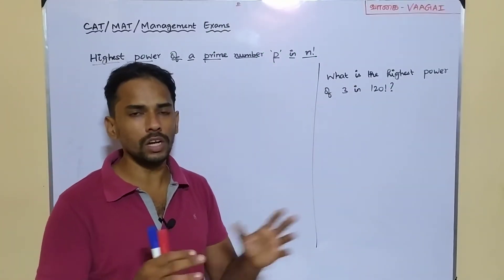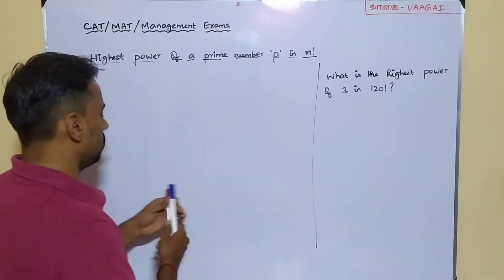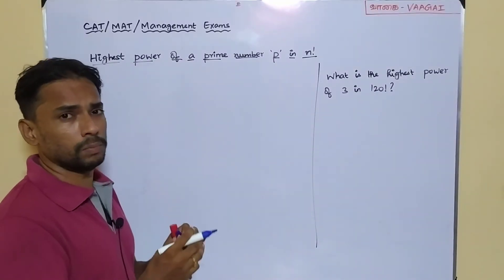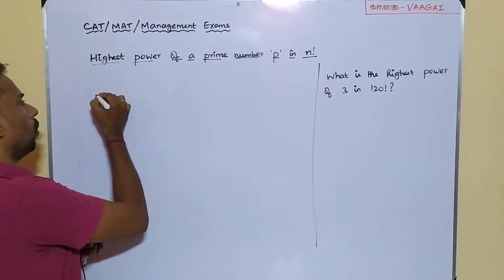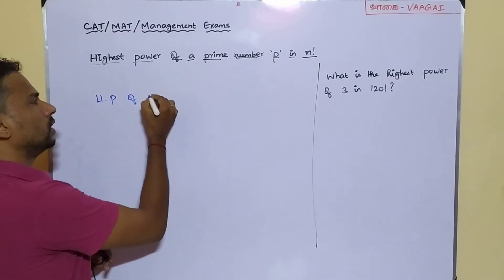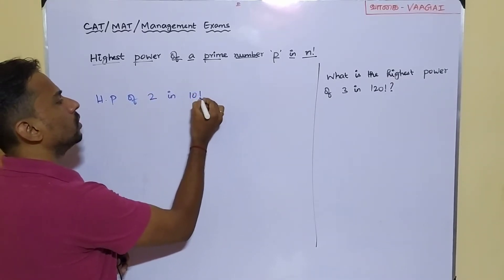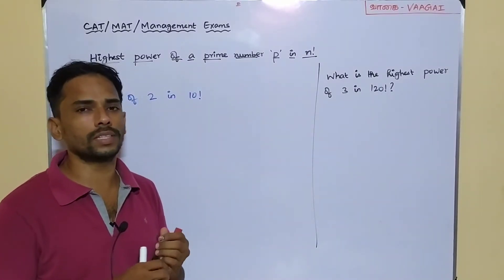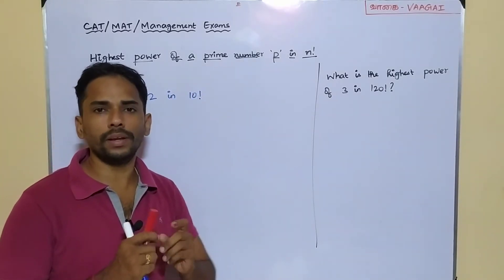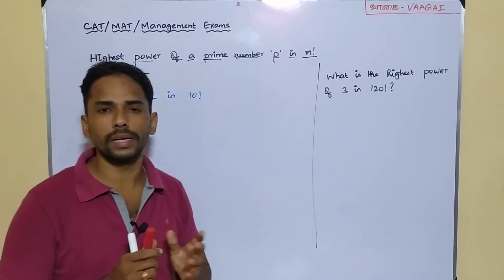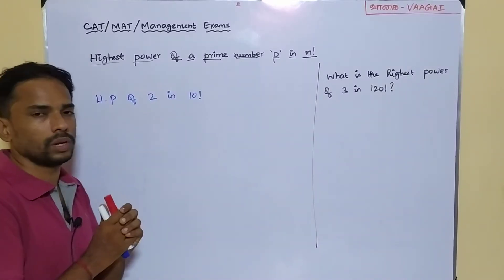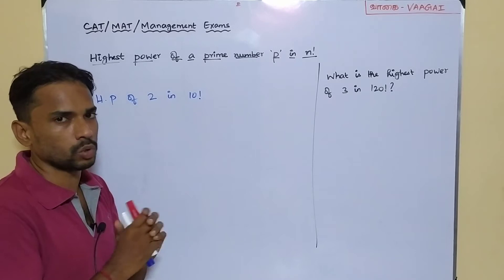I am going to take a very simple example using smaller numbers for better understanding. What is the highest power of the number 2 in 10 factorial? Here our value of n is 10 and the value of P is 2. Be clear — the value of P must be a prime number. That is our question: highest power of 2 in 10 factorial.